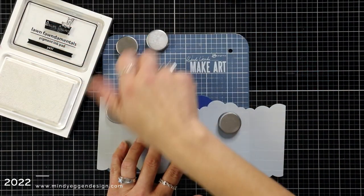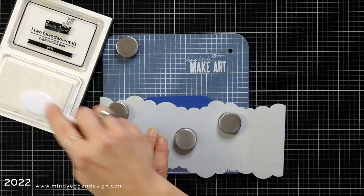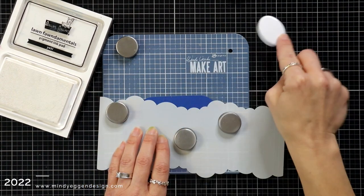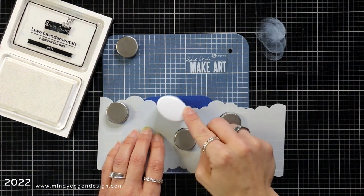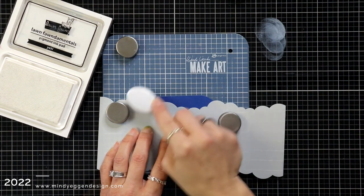This next piece that I had die cut out of the Blue Jay cardstock is actually an add-on piece, so it's not included with it. It is an add-on. I think it's great though, but the box looks good either way.